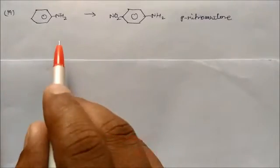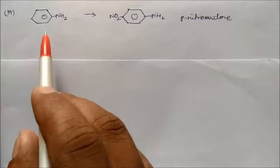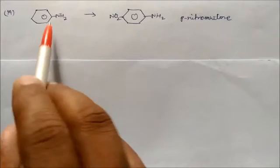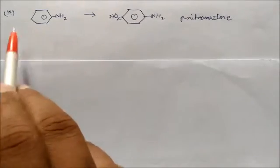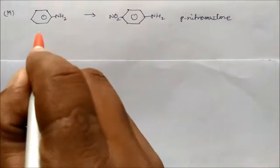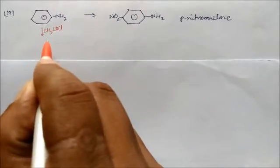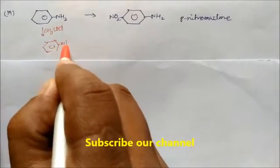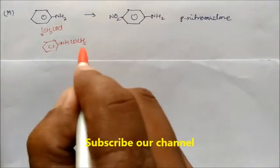We cannot do nitration immediately — we have to block the amine, because without blocking we will get three products: ortho, meta, and para. We want only para. So first block the amine using CH3COCl. This converts NH2 into NHCOCH3 — this is acetanilide.